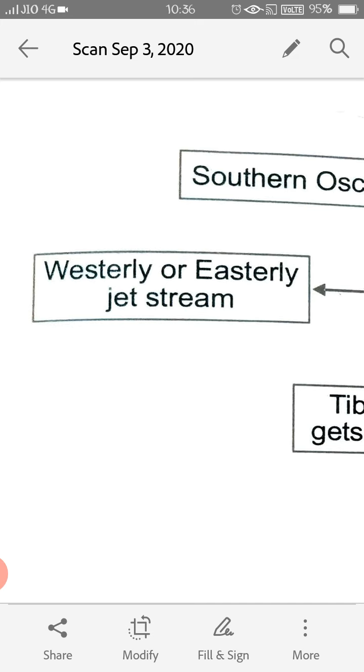Apart from this, it has also been noticed the changes in the pressure condition over the southern oceans also. Whenever the pressure of air is more or less, that also is affecting the monsoons.